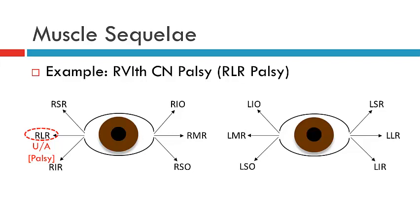The lateral rectus is assessed in right gaze, in dextroversion. If the patient is attempting to look into dextroversion, excessive innervation will go to that lateral rectus to try and achieve abduction. If excessive innervation is going to the lateral rectus of the right eye, due to Hering's Law the yoke muscle — the left medial rectus — must also receive excessive innervation. As such, we will see an overaction of the yoke muscle, the left medial rectus.